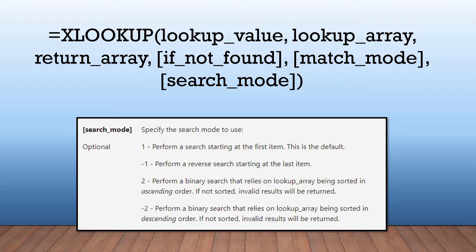The last argument is the search mode, where you specify the search mode to use. A value of one performs a search starting at the first item — this is the default. Negative one performs a reverse search starting at the last item. Two performs a binary search relying on the lookup array being sorted in ascending order, and negative two does the same but in descending order.